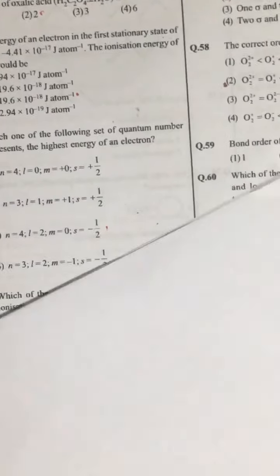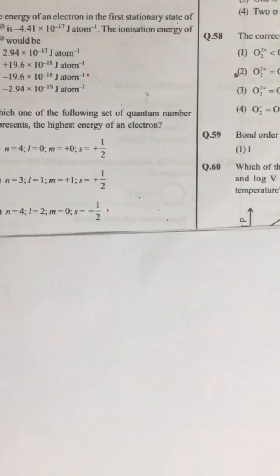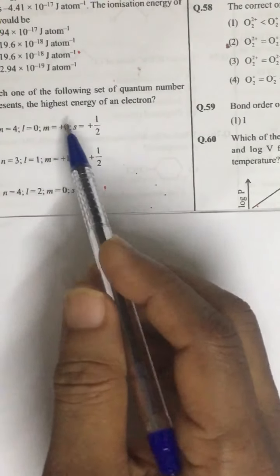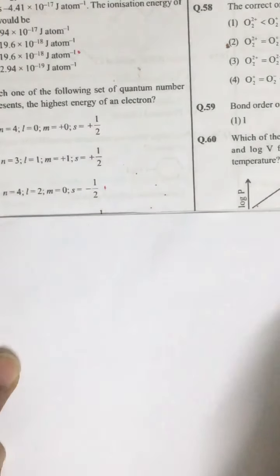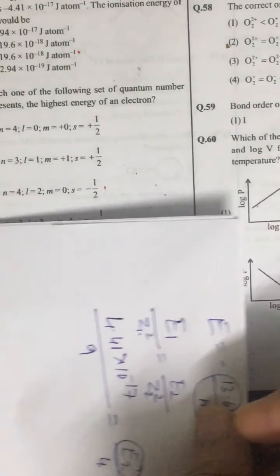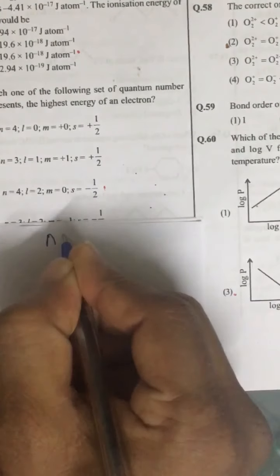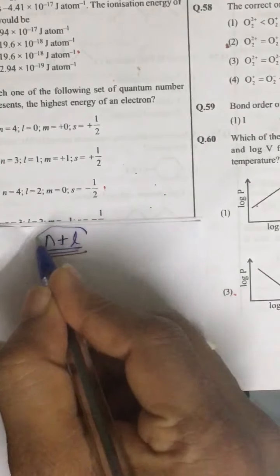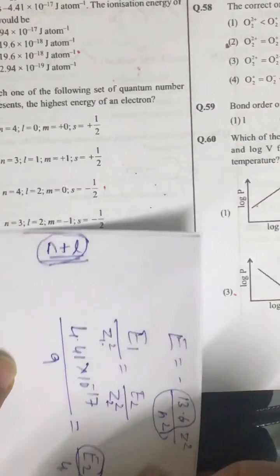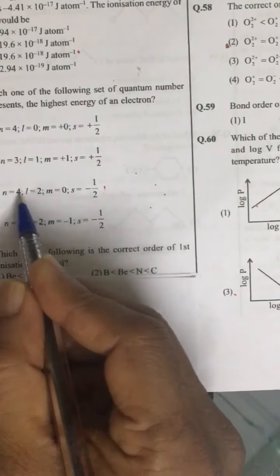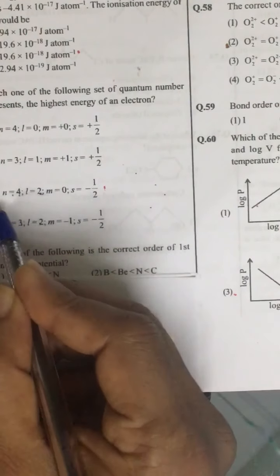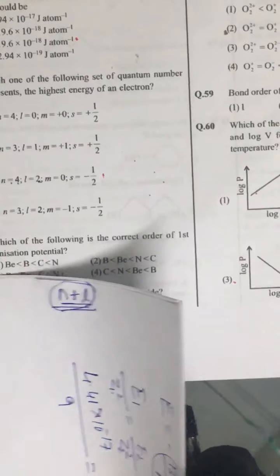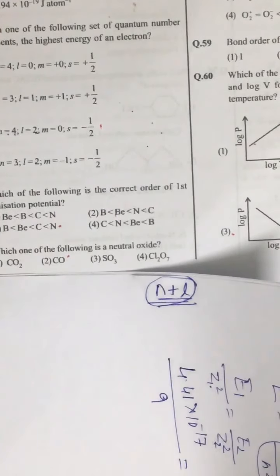Now look at question number 51. Which set of quantum number represents highest amount of energy. Energy of a shell is given by N plus L. Larger the value of N plus L greater is the energy. So 3 plus 2 is 5. 4 plus 2 is 6. So third option is correct. We are not bothered about magnetic quantum number and spin quantum number.